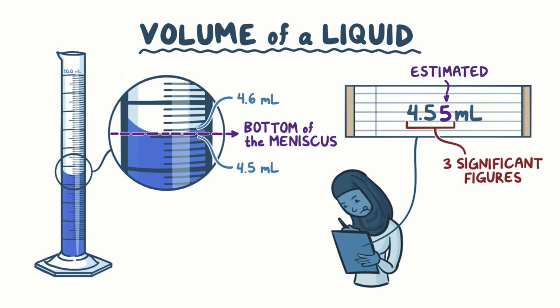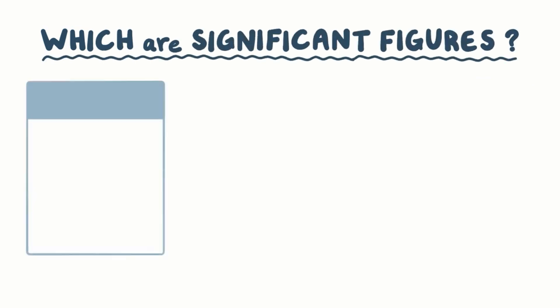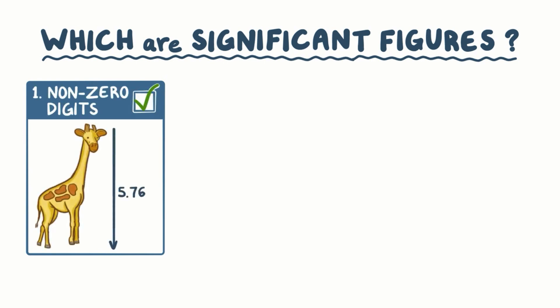Now that we know how to record our measurement, we want to figure out which of our recorded digits are significant figures. There are seven rules to remember when keeping track of significant figures. Rule 1 is that any non-zero digit is significant. For example, if the measurement is 5.76 meters, then the three non-zero digits 5, 7, and 6 are all significant, meaning that there are three significant figures.